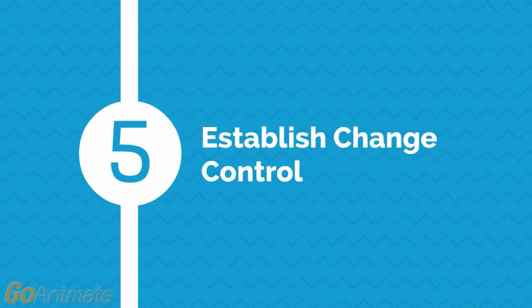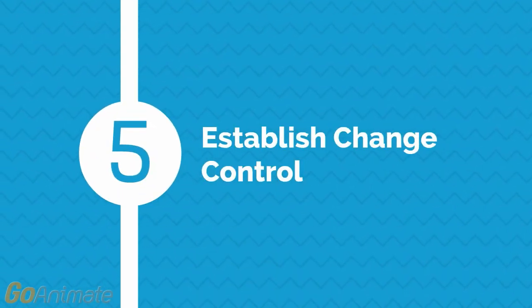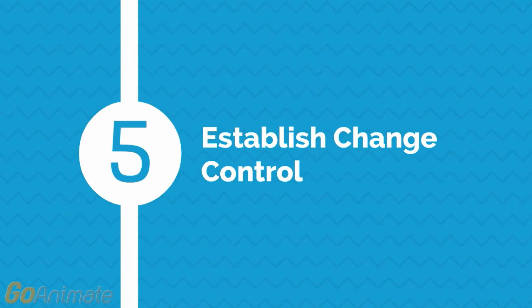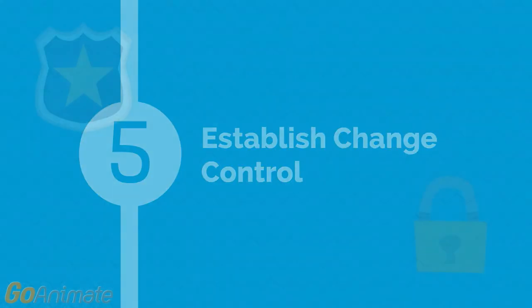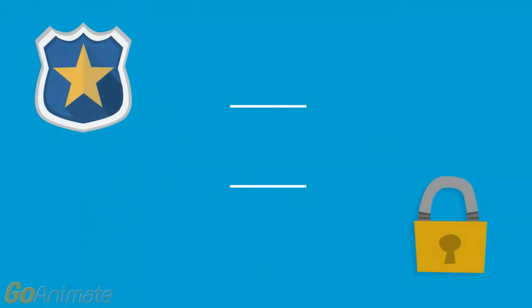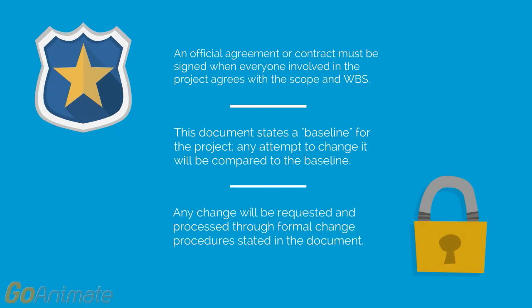Fifth and final point: establish change control. An official agreement must be signed when everyone agrees with the scope and WBS. This document states a baseline for the project. Any attempt at change will be compared to the baseline, and any change will be requested and processed through formal change procedures stated in this document.